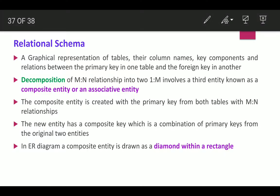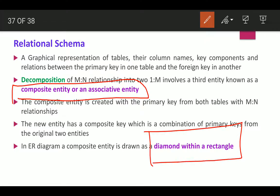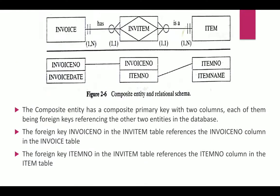Next comes the composite entity, also called an associative entity, and its decomposition. This involves decomposing a many-to-many relationship into two one-to-many relationships using a composite entity. A composite entity is represented with a diamond inside a rectangle. It has a composite primary key — a combination of two primary keys — with two columns.